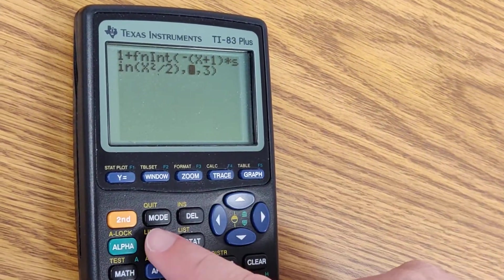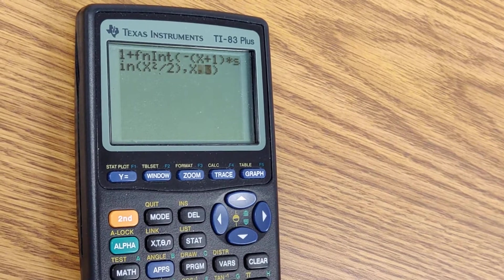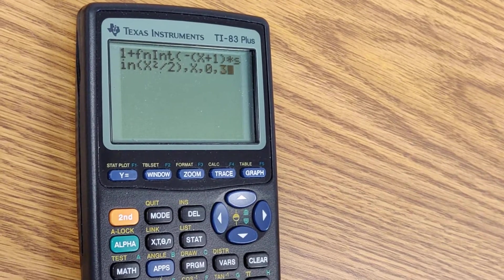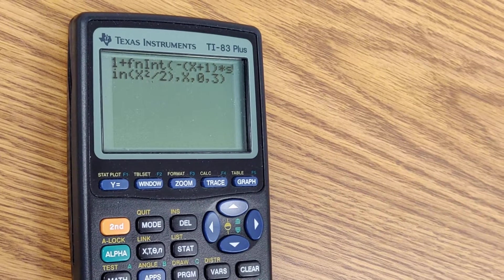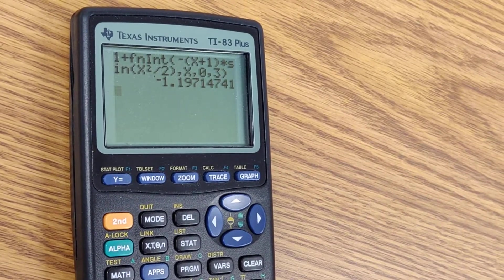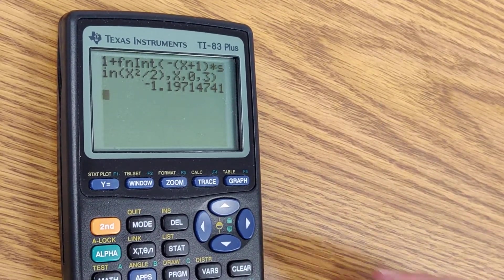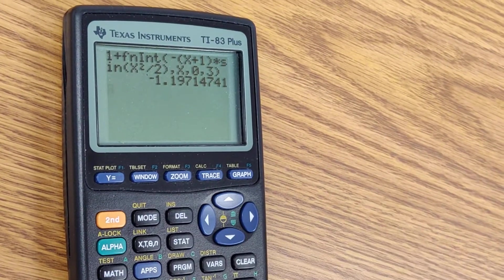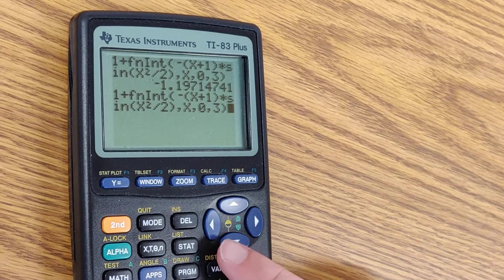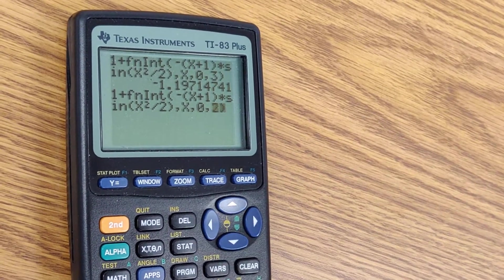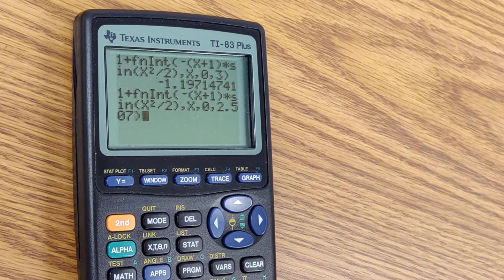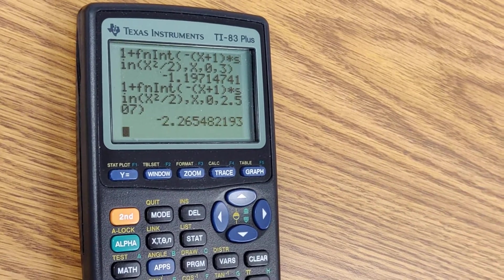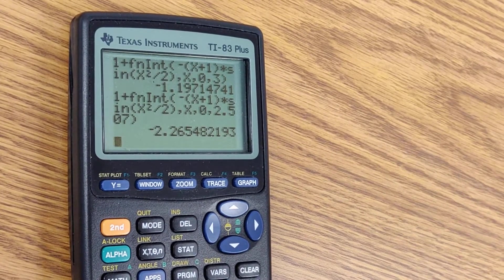I forgot to enter the x. No problem. So x, comma, 0, comma, 3. There we go. So at time t equals 3, our position is negative 1.17. And now we go second entry. Same integral. The only thing that we're going to change is 2.507. Close parentheses. And we get negative 2.26.